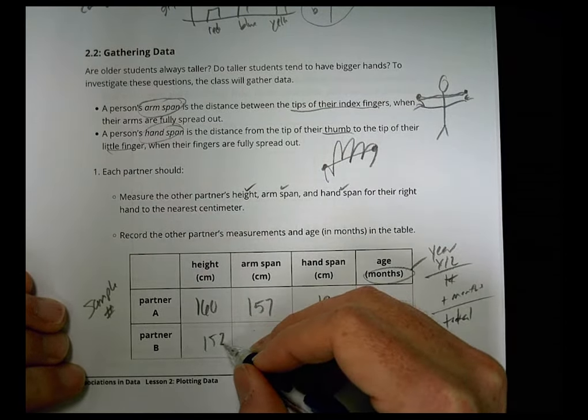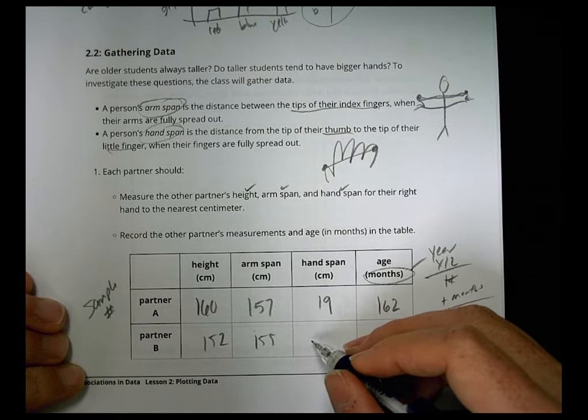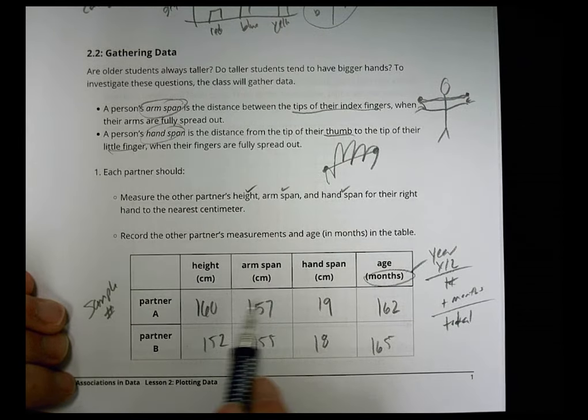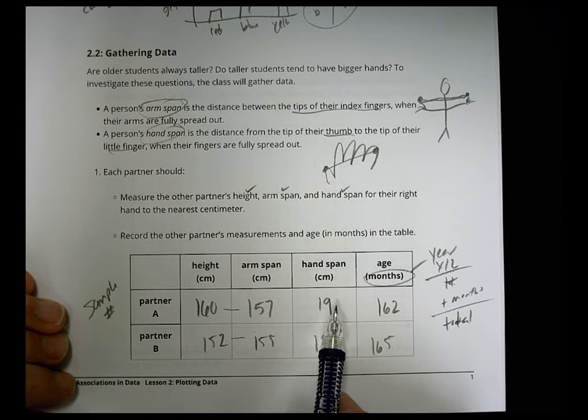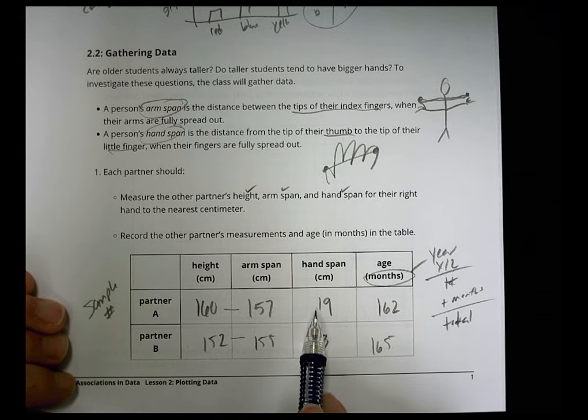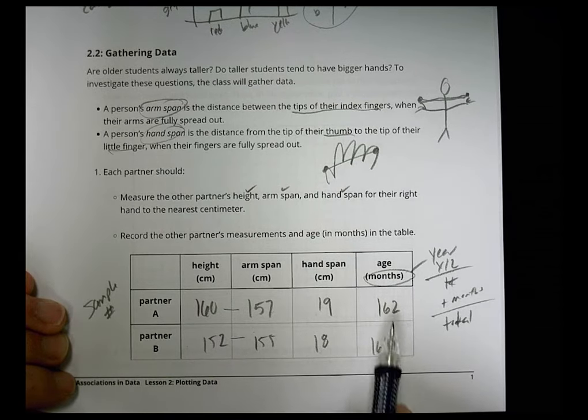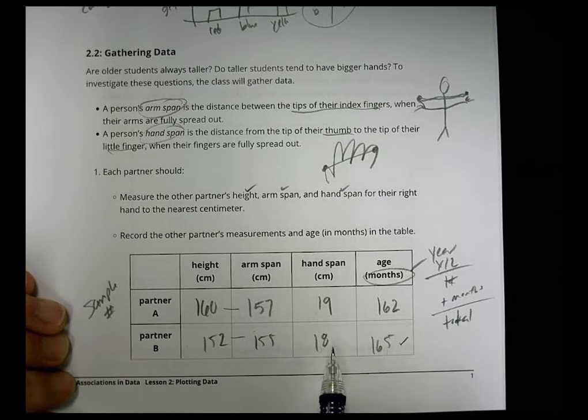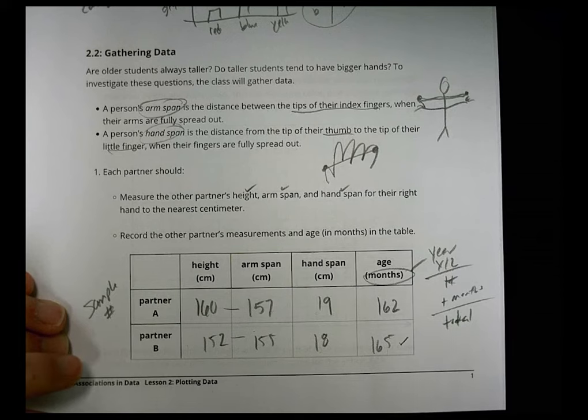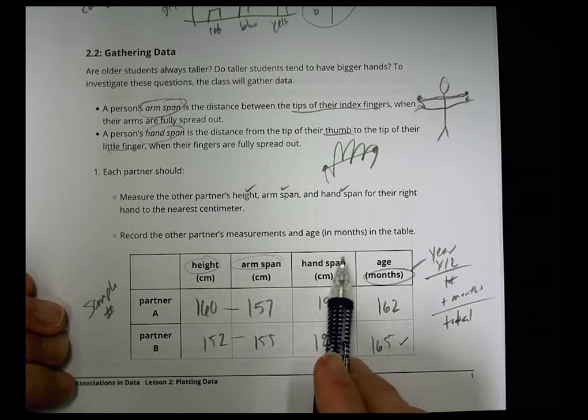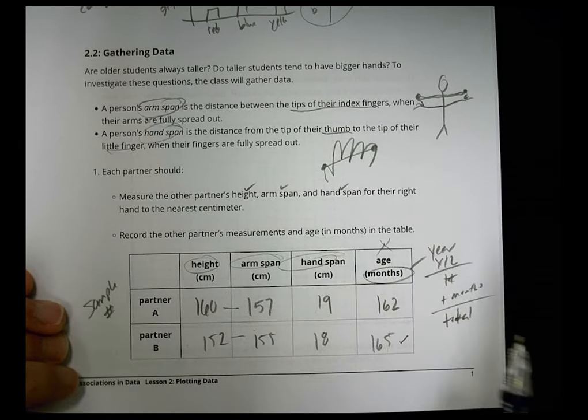So here are some sample numbers that I got from my book here. It said maybe partner 1 was 160 centimeters, and its arm span was 157 centimeters. We got its height, its arm span, and the hand span it said was 19. And this person happened to be 162 months. Notice we're doing months, so do your year times 12, and then add, whatever that number is, add the other months you are old for your total. Partner B, it said it was 152, 155 centimeters arm span, 18, and it was 165. So using the data, we can see there's a lot of similarity between a height and an arm span. Those numbers are pretty close. And we can see that the hand span, seems to be the taller you are, your hand span is greater.